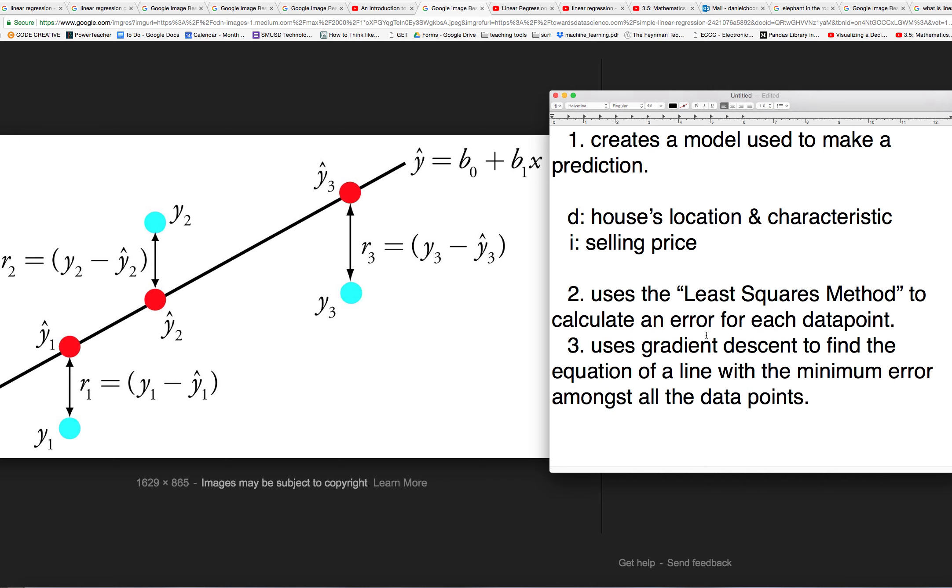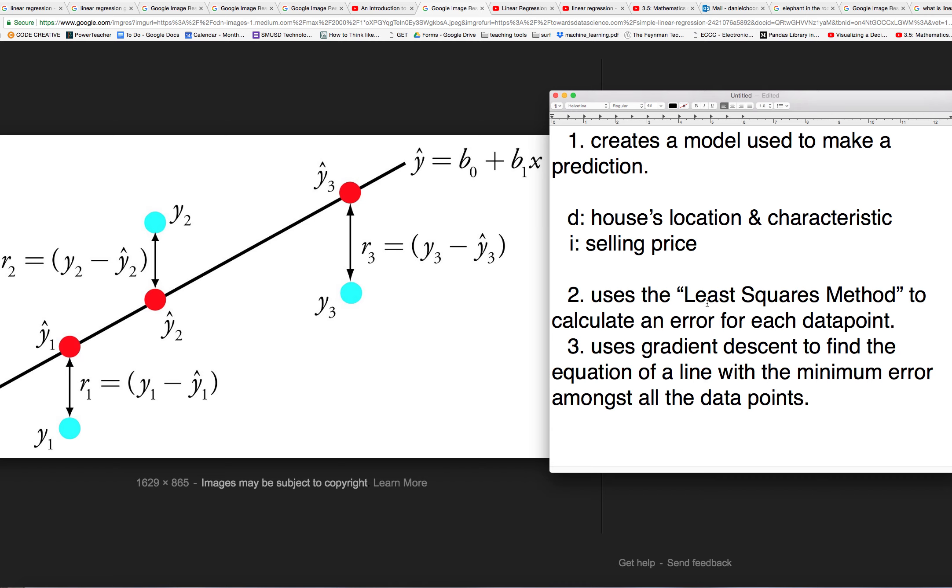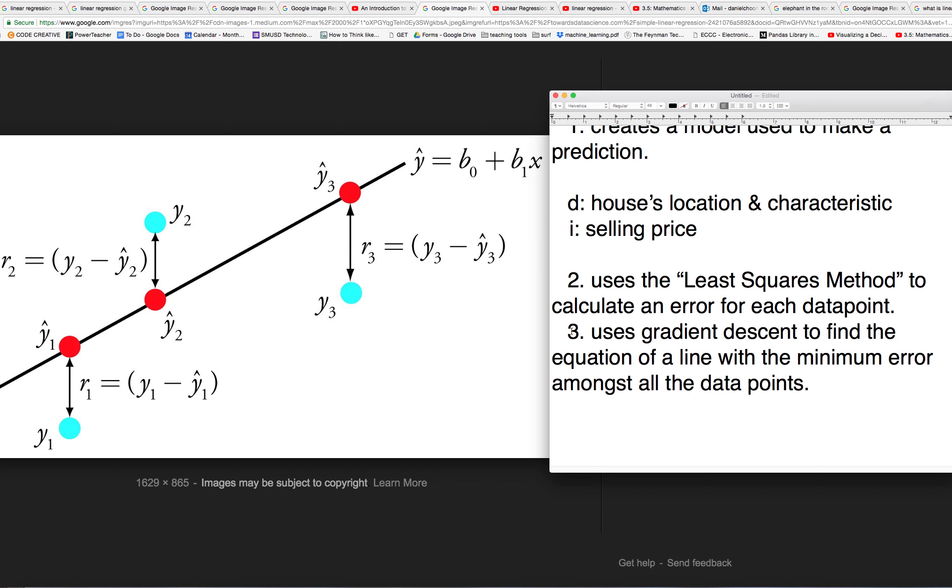And least squares, how does that work? Well, maybe I'll talk about that in the next video. But just understand that in order to find this line, given the data points, it uses the least squares method. And I'll go into more detail on that in the next video. And then it also uses what's called gradient descent to find the equation of this line as well. So it uses least squares method and gradient descent in combination to find this line.